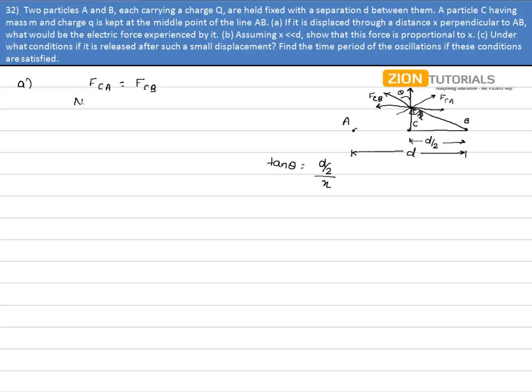Now net force acting on C due to A and B is F_net. That is equal to 2 times the force on C due to A into cos of theta.